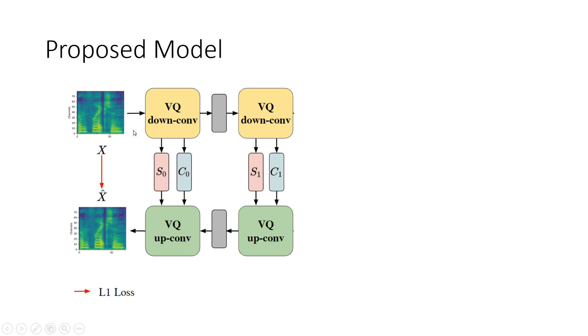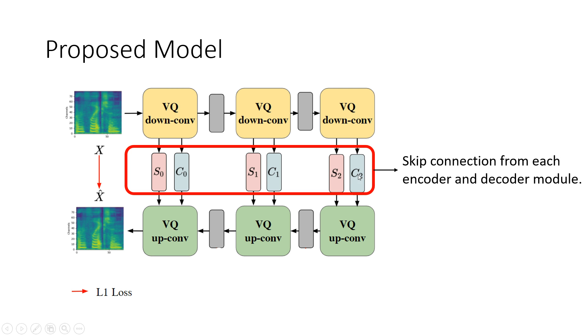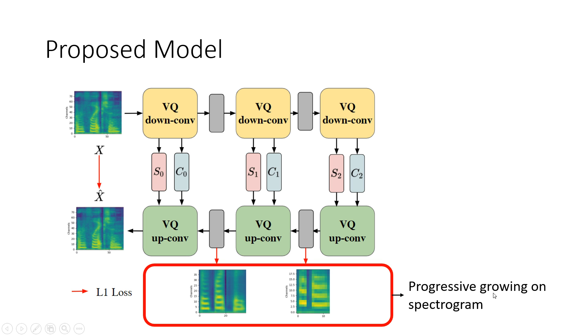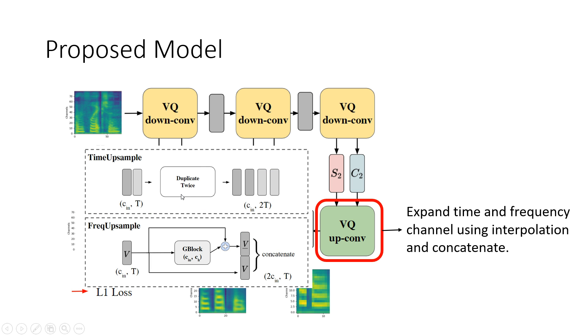In our approach, we enlarge our model architecture and make the whole model deeper. Then we add skip connections from each encoder to the corresponding decoder. Third, we add progressive growing architecture at the output of the decoder layer. One difference between our model and the original progressive growing architecture is that progressive growing architecture trains different resolution images progressively. However, in our architecture we train them together. Because we use progressive growing architecture, we should expand the time and frequency channel using interpolation and concatenation. This is the architecture of our VQVC+ model.